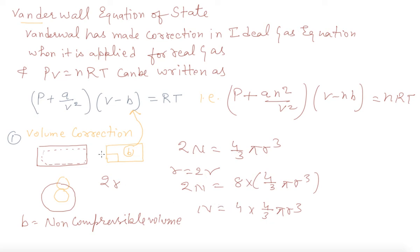In the mathematical language, simply we can say that the volume which cannot be compressed, that is called excluded volume and that stands for B and which has been discovered by the Van der Waal. And next the pressure correction.